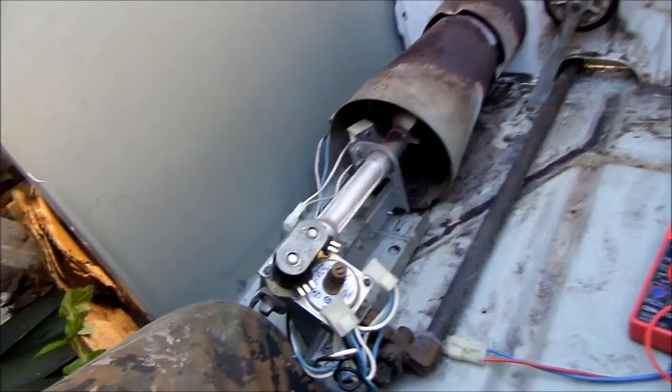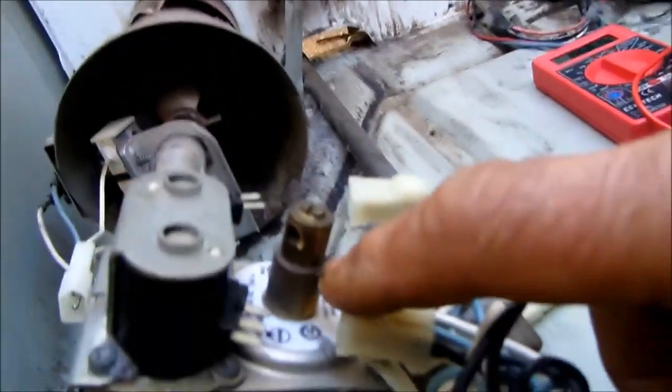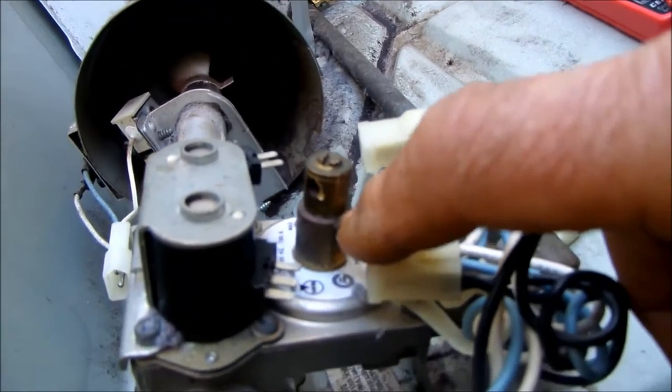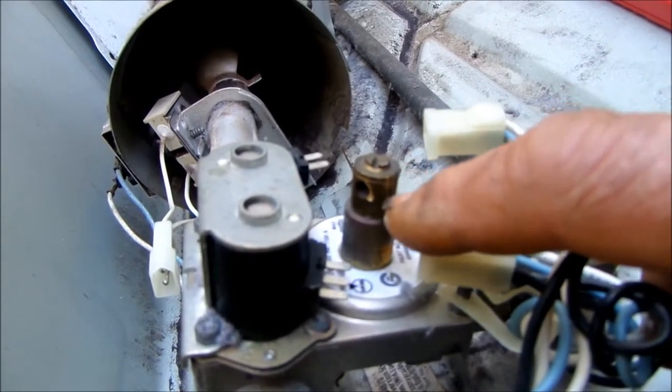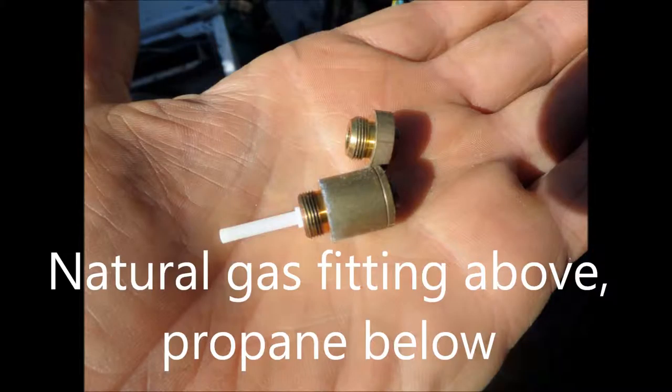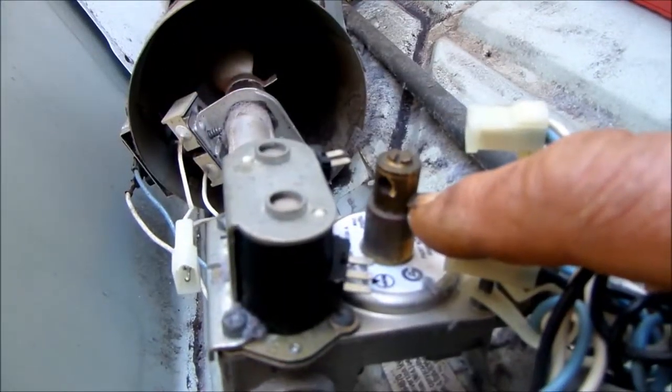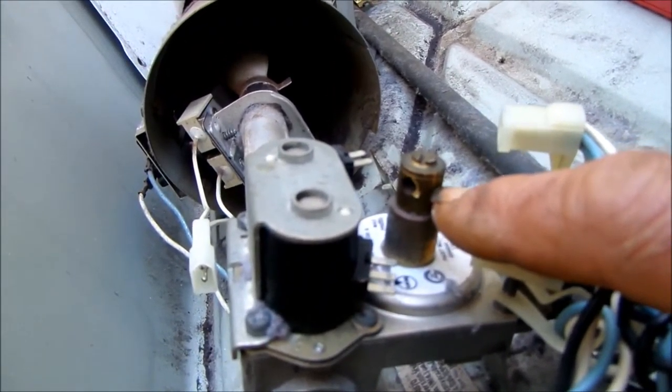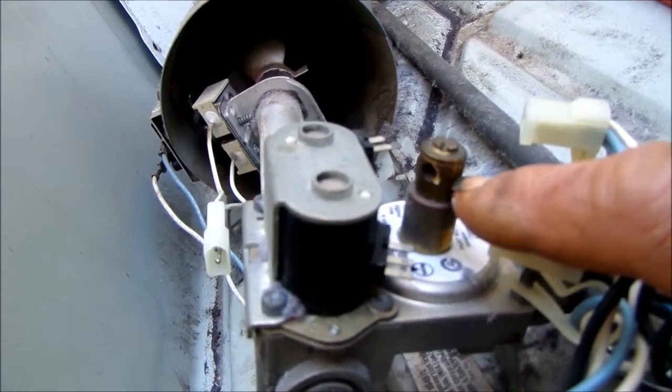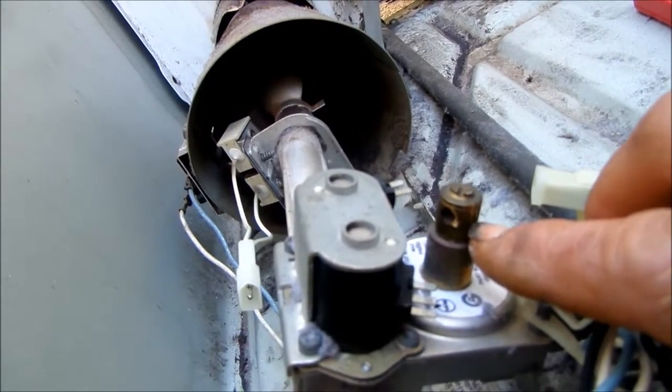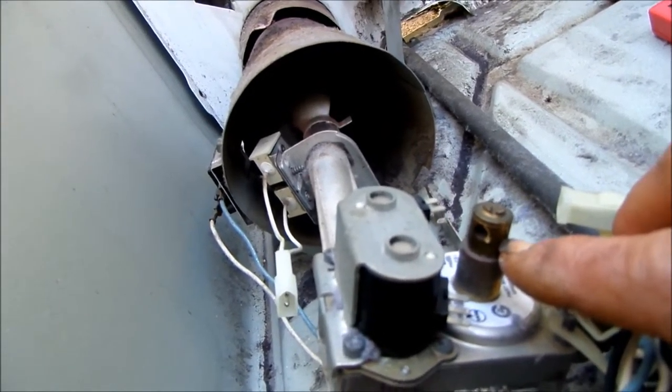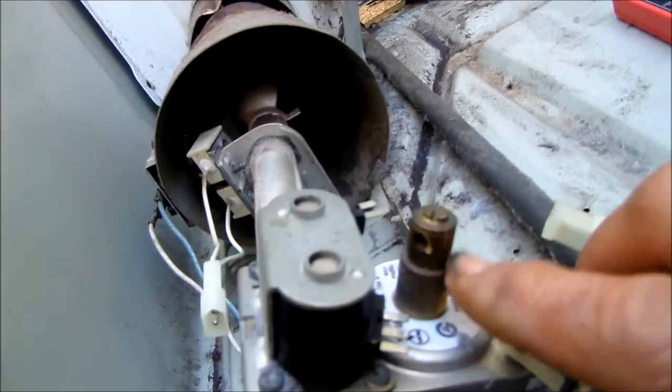Now this one here is already converted to propane. As you can see, it has the larger head on the top of the valve here. The regular gas head here is about half this size. And you can usually tell, the regular gas top is about a quarter inch. This one is about a half inch, almost an inch. This is the propane one.